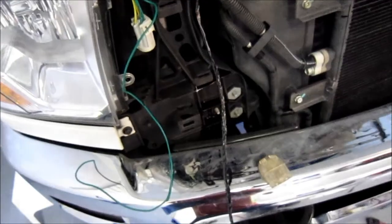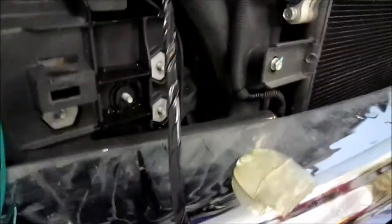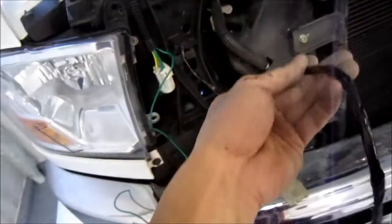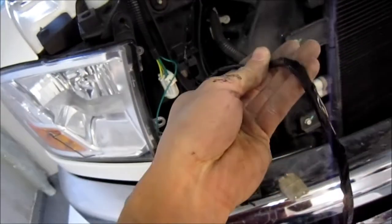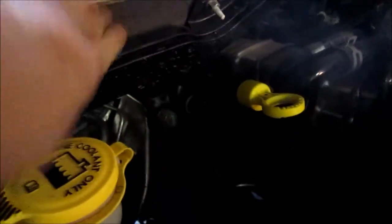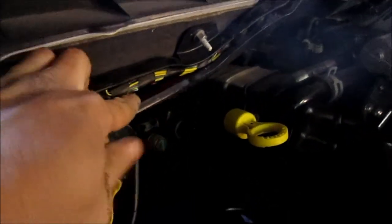What we've gone ahead and done was, we extended the wires that activate the solenoid, and we're going to run it along the driver's side, and hook up the solenoid on the driver's side firewall. To get to the other side, we're going to run through this factory loom right here.